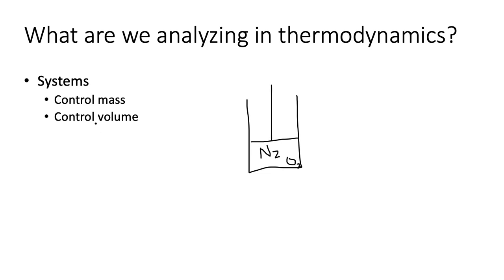We could also say a control volume is our system, and the boundaries of the control volume could be defined in multiple ways — this is really subtle but bear with me. We could define the control volume as everything inside the piston-cylinder apparatus. If I draw a dotted line, everything inside that dotted line is our control volume. Now you might say: isn't that also the control mass? Aren't we saying the same thing?